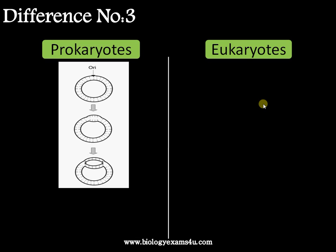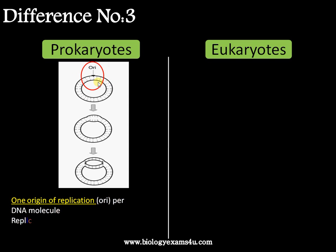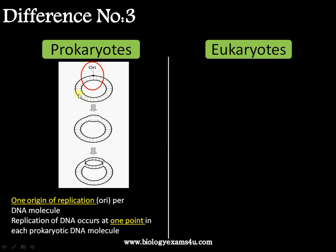Difference number three is regarding the ORI, or origin of replication — a specific sequence required to initiate DNA replication. In the case of prokaryotes, there is a single ORI per DNA molecule. The prokaryotic genome is a single circular DNA molecule with a comparatively small amount of DNA, and replication occurs at a single point.